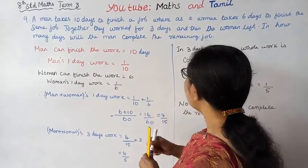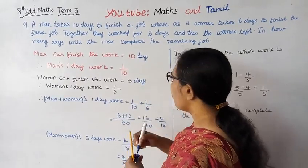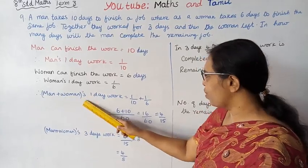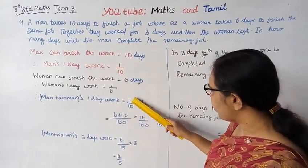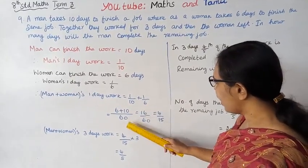Man's one day work is 1/10, woman's one day work is 1/6. Man plus woman's one day work equals 1/10 plus 1/6.